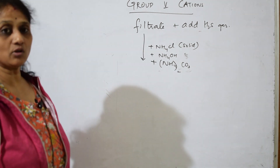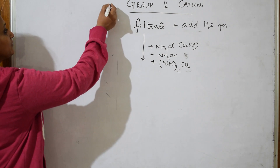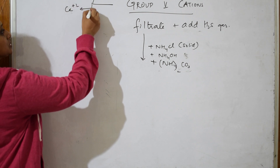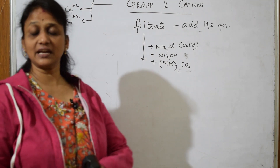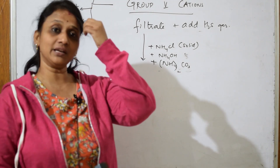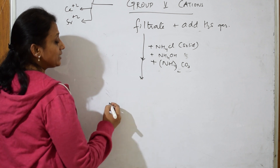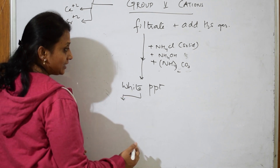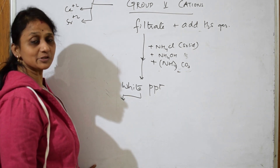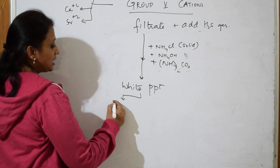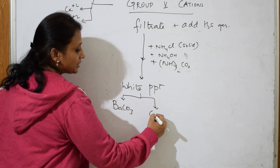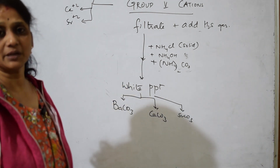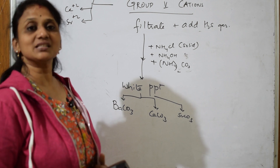Group 5 includes three cations: barium (Ba²⁺), calcium (Ca²⁺), and strontium (Sr²⁺). When you add the group reagent — excess ammonium carbonate — you get a white precipitate of all three. They precipitate as carbonates: barium carbonate (white ppt), calcium carbonate (white ppt), and strontium carbonate (white ppt). All three come out as white precipitates.